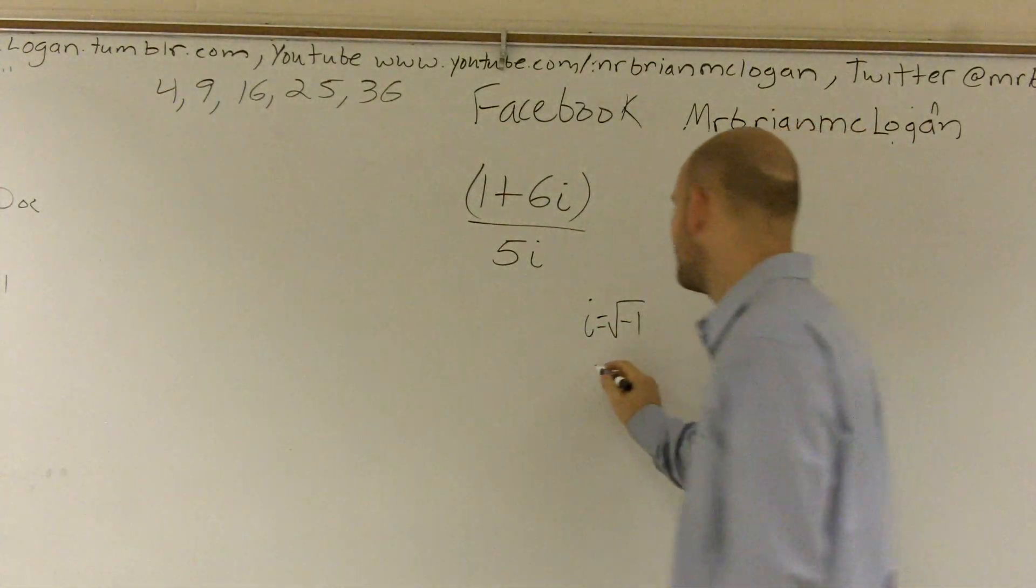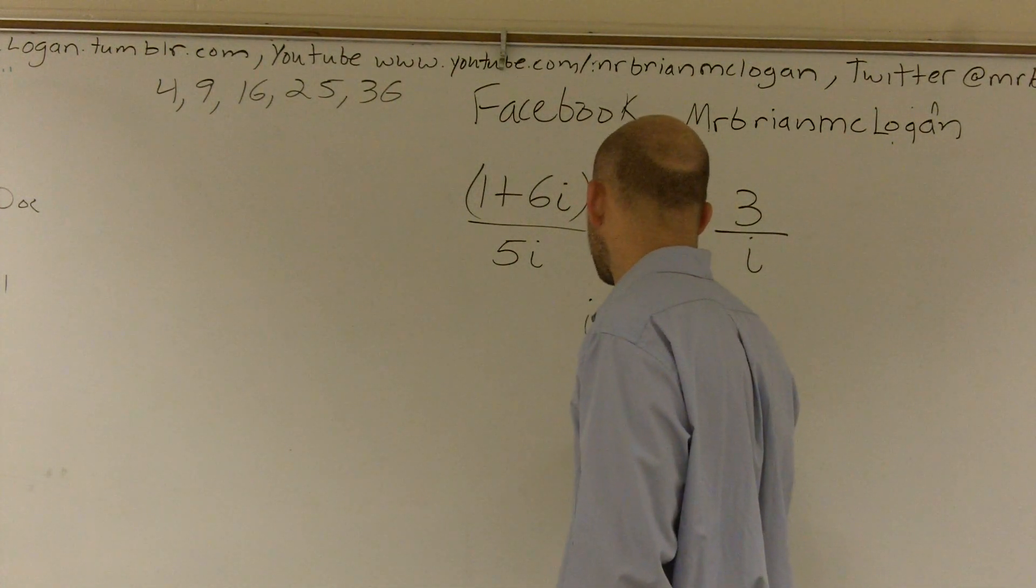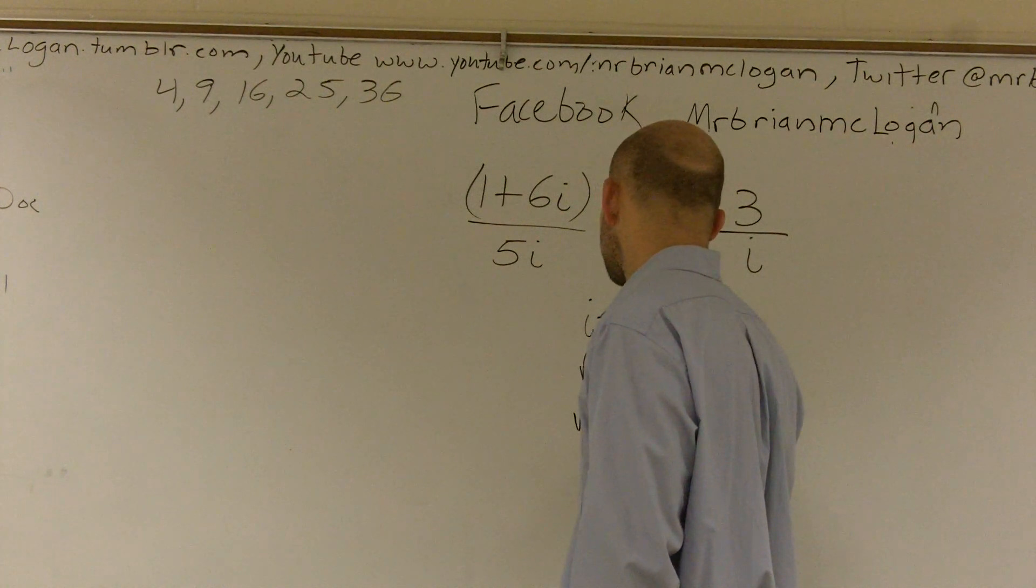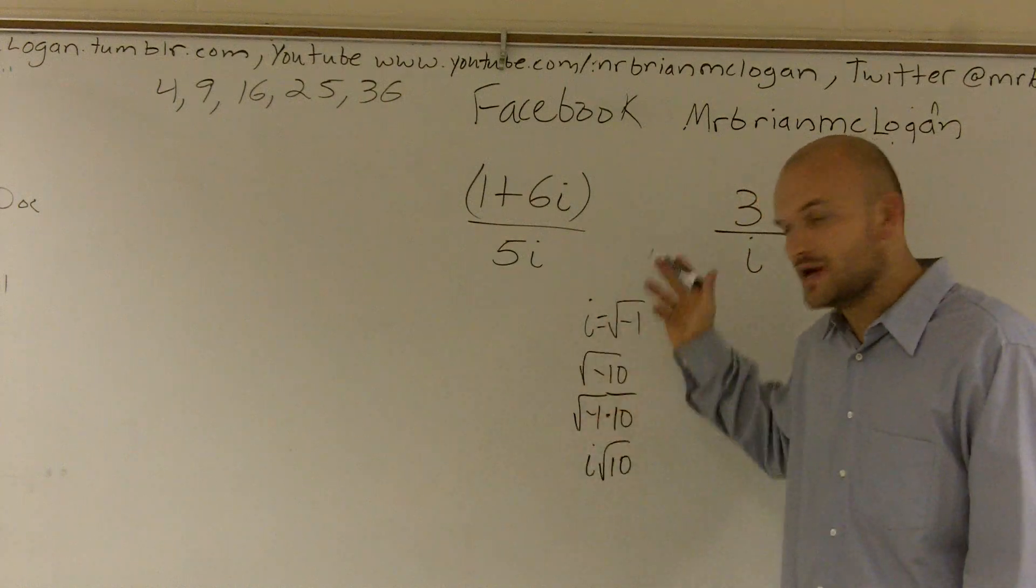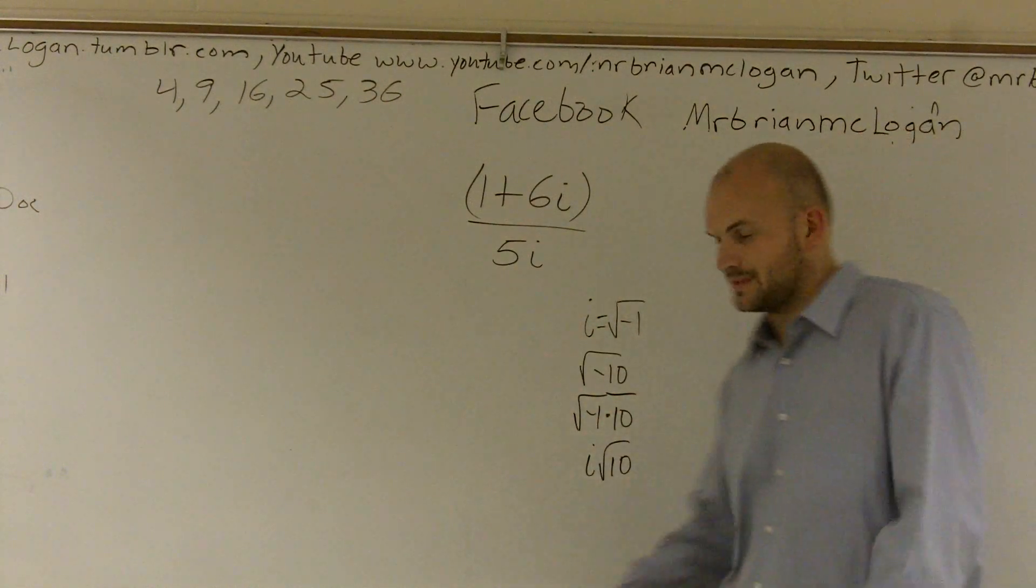So if I have 10, I can rewrite that as the square root of negative 1 times 10. So it would be i times the square root of 10. Right? So whenever you have a negative number, we factor out a negative 1 and we make that i.